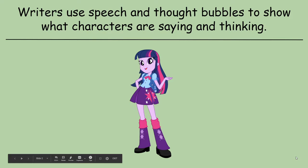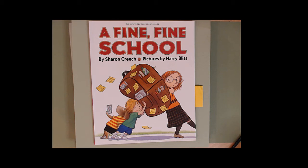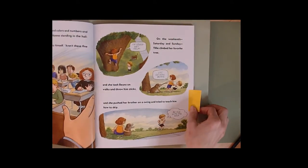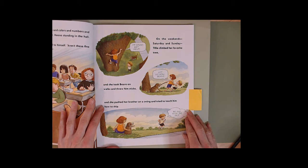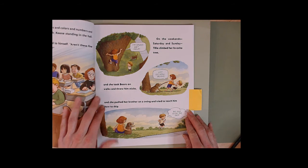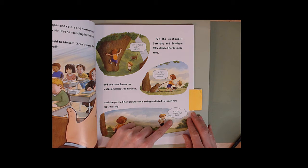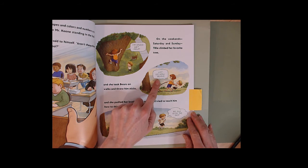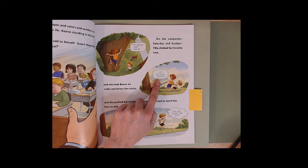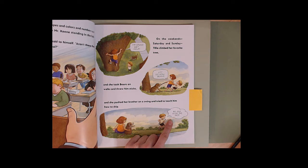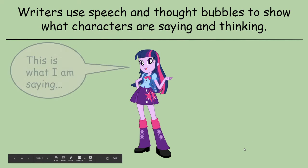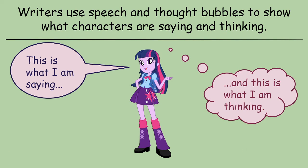Today we are going to be looking at how writers use speech and thought bubbles to show what characters are saying and thinking. In our first book, A Fine, Fine School by Sharon Creech, what do you notice about the illustrations in these pages? Who's saying these words? How can you tell? And how are these bubbles different from this bubble? This one's called a speech bubble — it shows us that a character is talking. And this is a thought bubble — it shows us what a character's thinking. This is what I'm saying, and this is what I'm thinking.